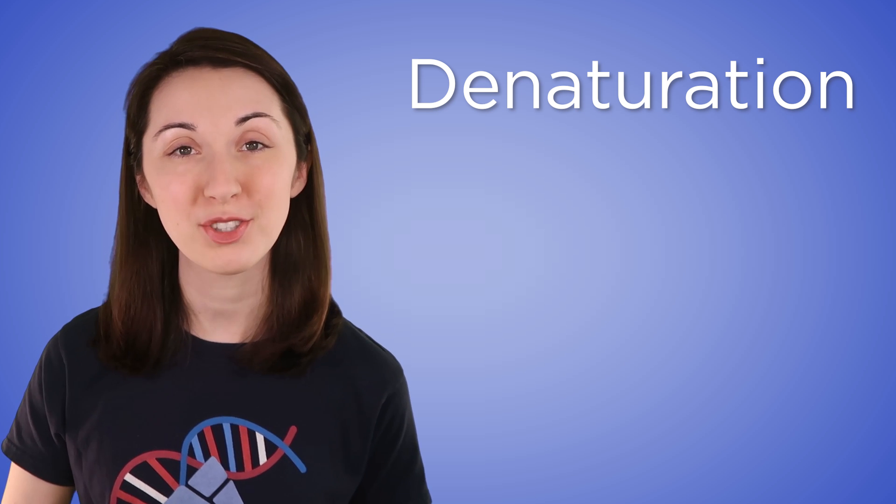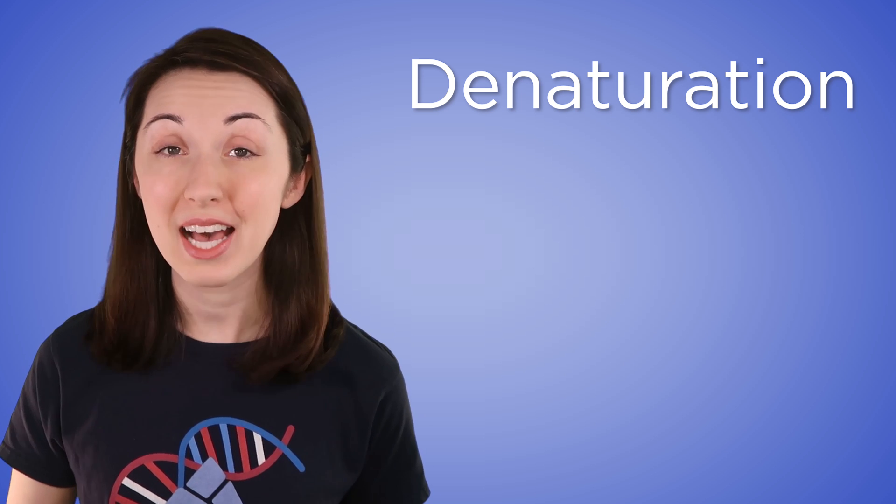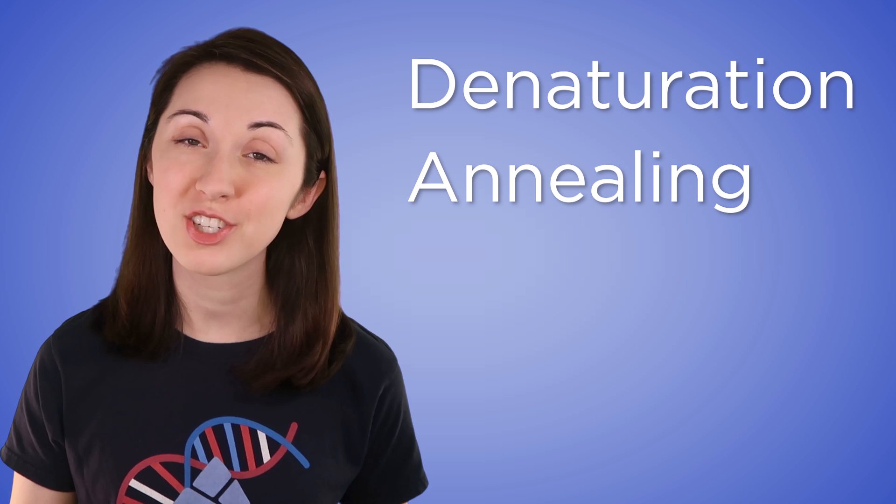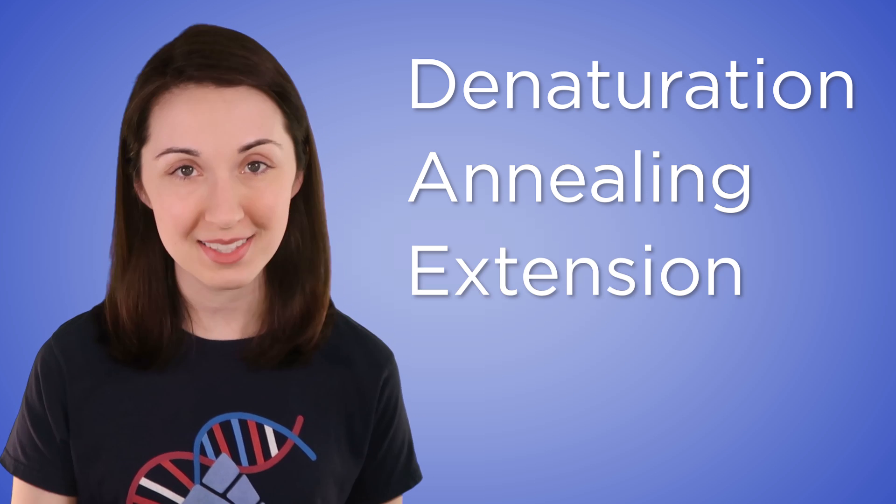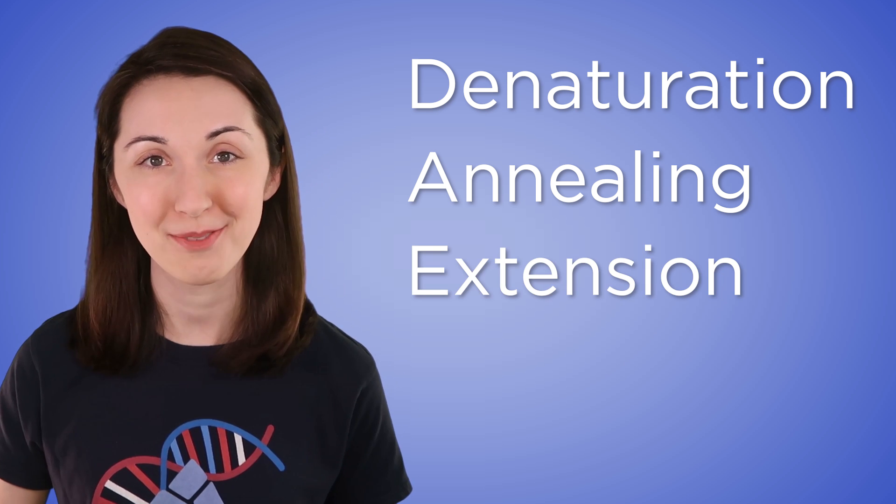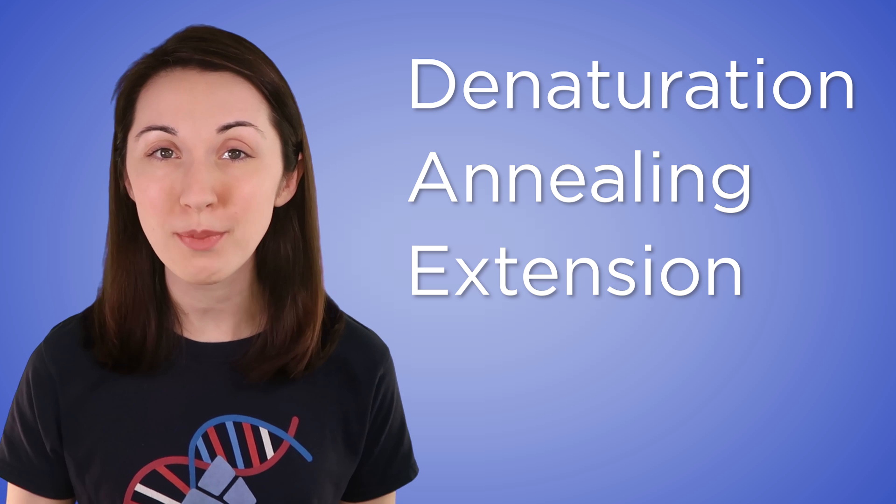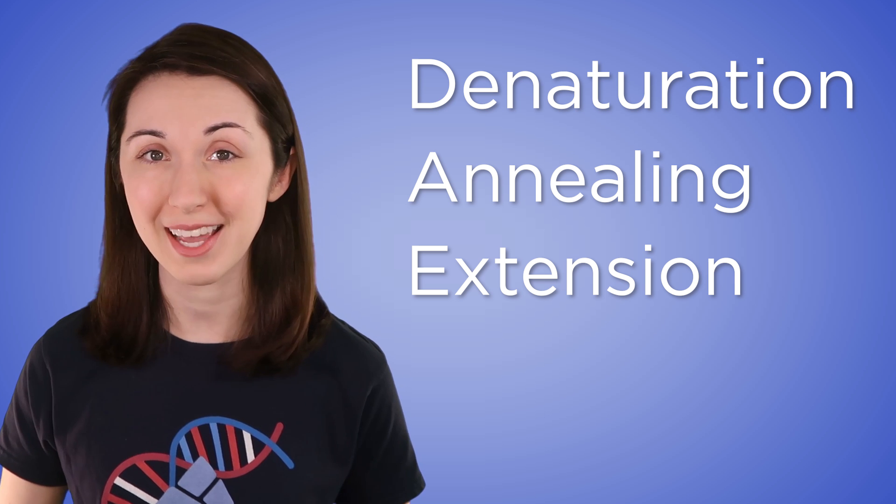PCR is composed of three main steps. Denaturation, which separates the two complementary strands of DNA. Annealing, which specifies the region of DNA to be copied. And extension, which copies the DNA. These three steps will then be repeated over and over again. Now let's take a deeper look into how all of this works.